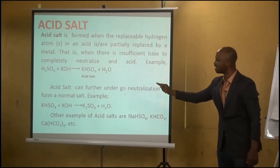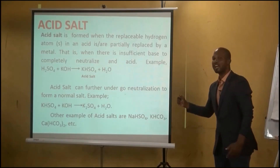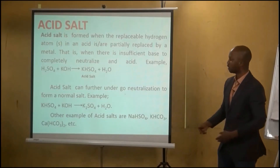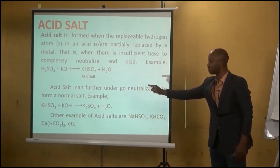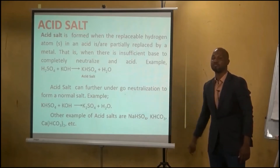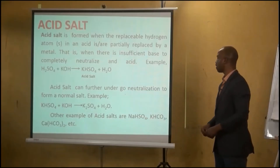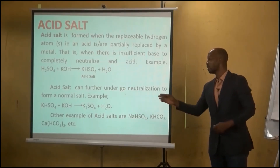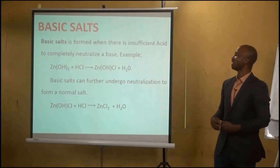Acid salts can further undergo neutralization to form a normal salt — if you add more base, the remaining hydrogen is completely replaced. For example, potassium hydrogen tetraoxosulfate(VI) plus potassium hydroxide gives the normal salt. Other examples of acid salts include sodium hydrogen tetraoxosulfate(VI), potassium hydrogen trioxocarbonate(IV), and calcium hydrogen tetraoxocarbonate(IV), among others.